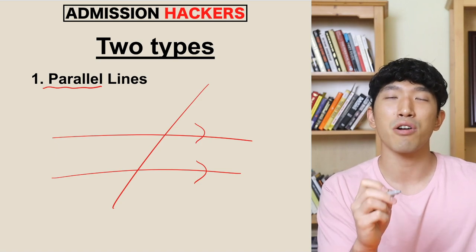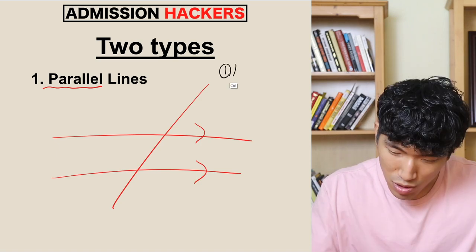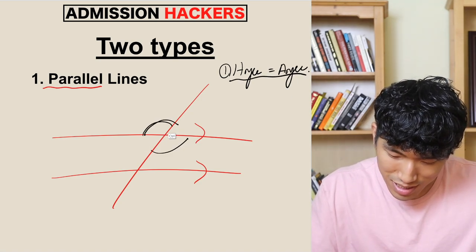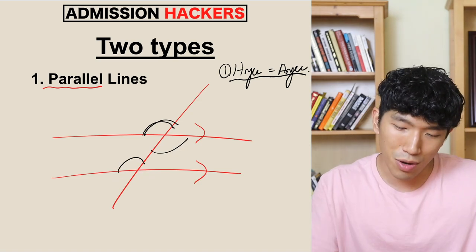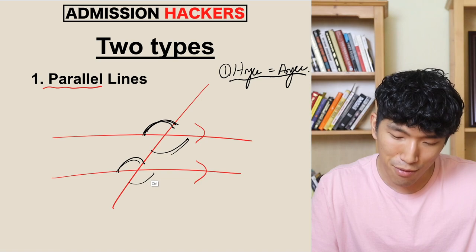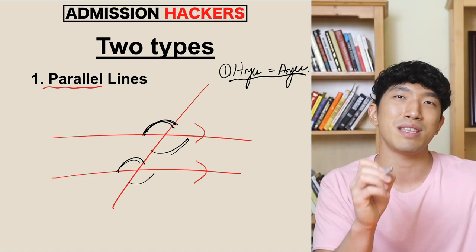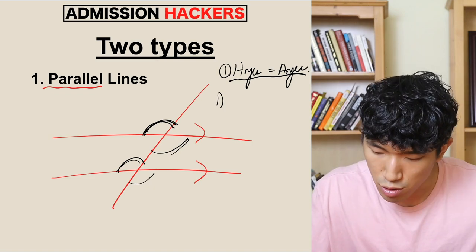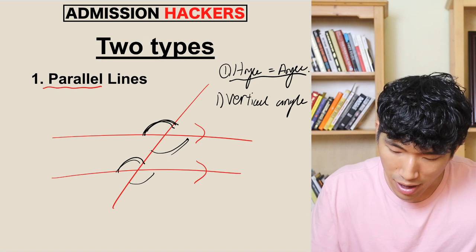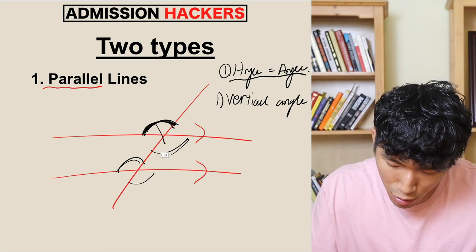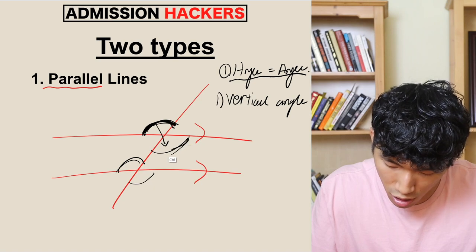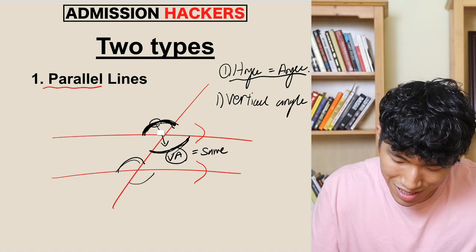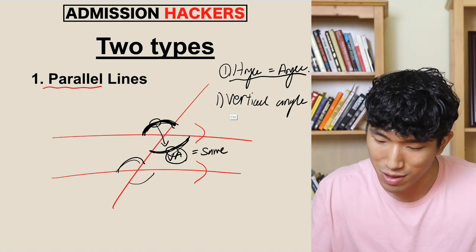Within the parallel line questions, they are only testing you on one simple thing: which angle is the same as the other angle. To understand which angles are equal to each other, there are two things you need to know. The first one is vertical angles. Vertical angles are the angle across from a given angle — and we know that vertical angles are always the same. So this angle and that angle across from it are going to be equal.